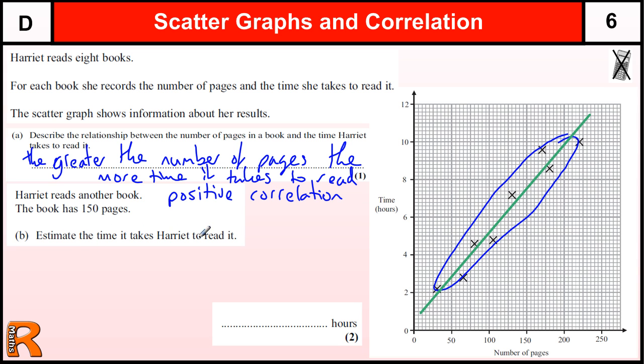So estimate the time it takes for Harriet to read a 150-page book. So if we just draw an arrow in here, we've got 150 pages, which is here.